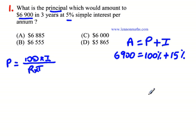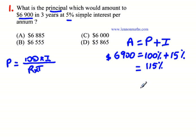Think about it. So $6,900 will be equivalent to 115% — it's going to be made up of 100%, the amount that was put in, plus the 15% interest. So we need to know what the original amount is, which is 100%. We can use several methods to work this out, but let's use this formula instead.